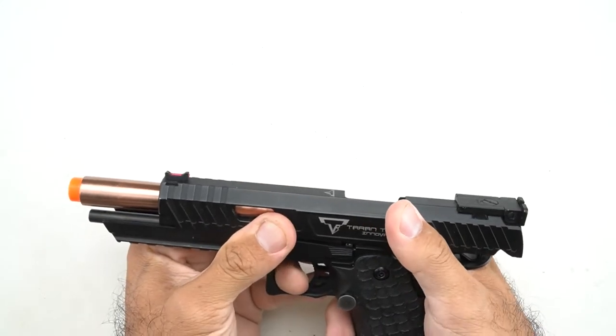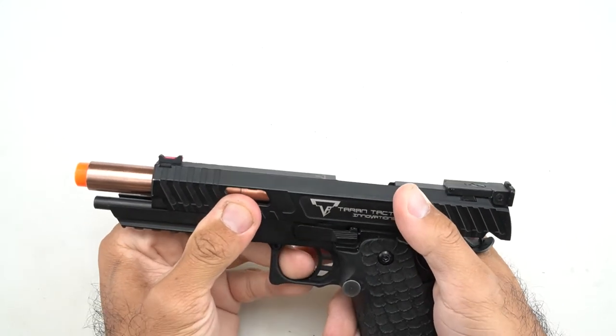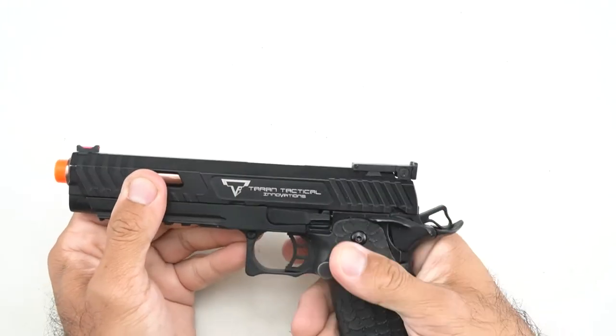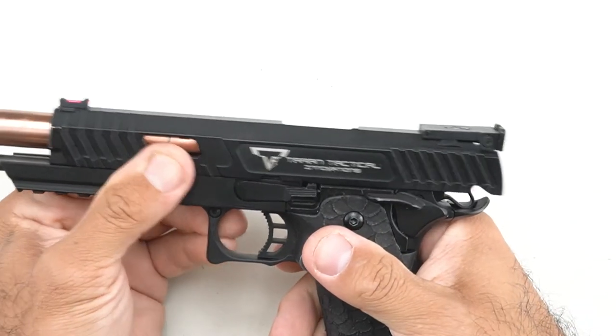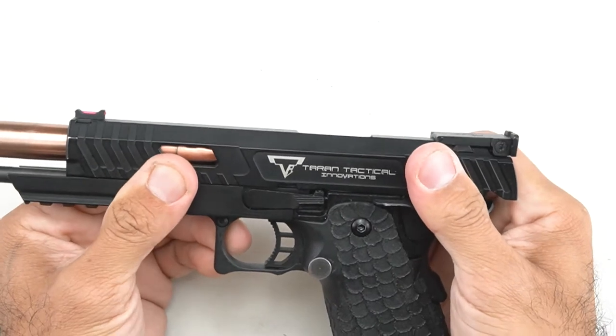We're going to start by pulling the slide back to the takedown notch. That is just before the slide stop notch. So line it up there.